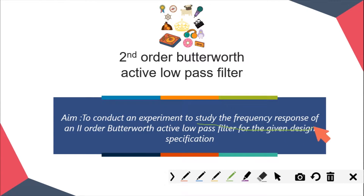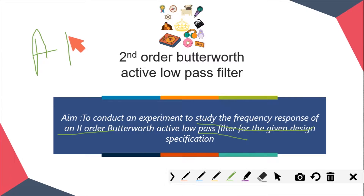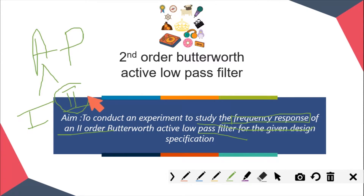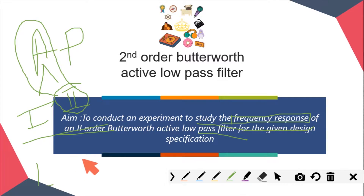Here what we are doing is studying the frequency response of a second-order filter. There are two types of filters: active filters and passive filters. In active filters, there are again many types — first-order filter and second-order filter. Here we are studying the frequency response of a second-order Butterworth active low-pass filter. In active filters there are again two types: low-pass and high-pass.